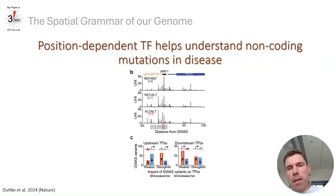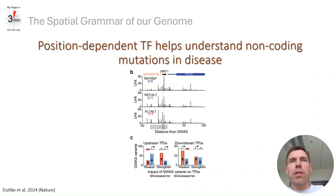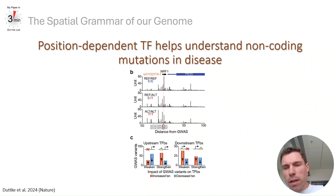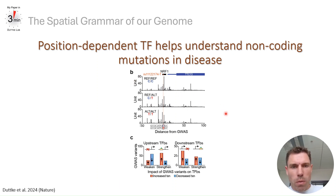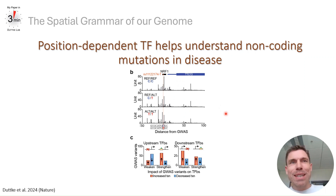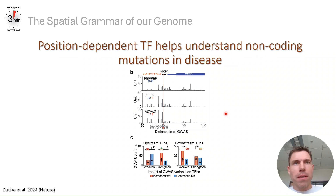Investigating the role of position-dependent transcription factor function across human individuals and disease showed that disease-associated variants identified through GWAS — as shown here for the rs11122174 locus — recapitulated position-dependent transcription factor function, as summarized here.